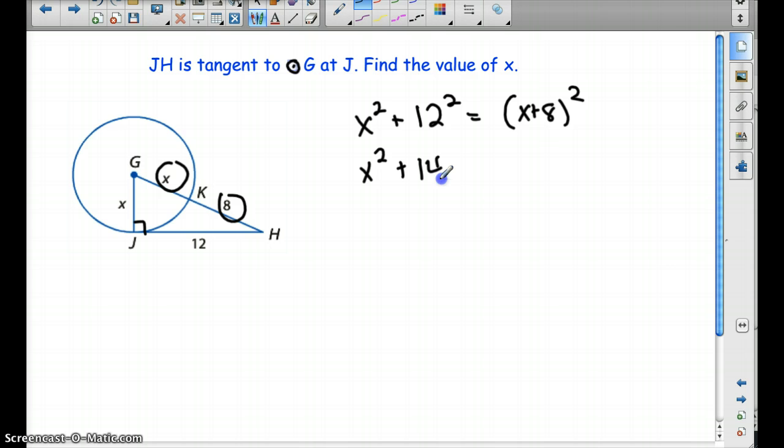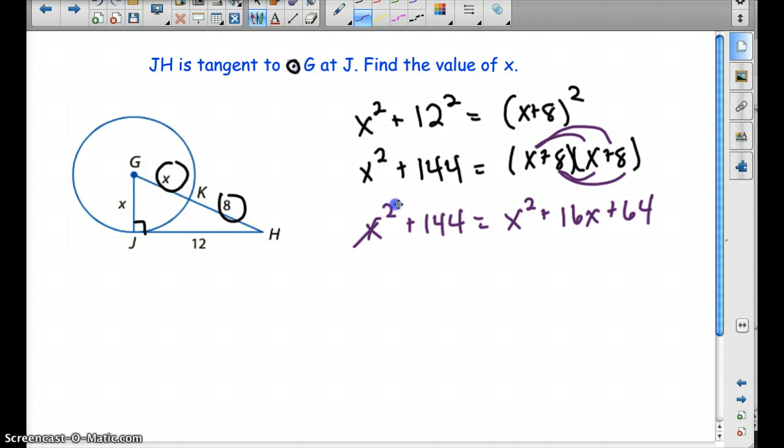So we have X squared plus 144. Now remember, when you have a binomial and you're going to square it, you're going to have to FOIL. So first, outer, inner, last. So we end up with X squared plus 16X plus 64. Okay, the X squared ends up canceling out. We can subtract 64 from both sides. We get 80. So X ends up being 5.